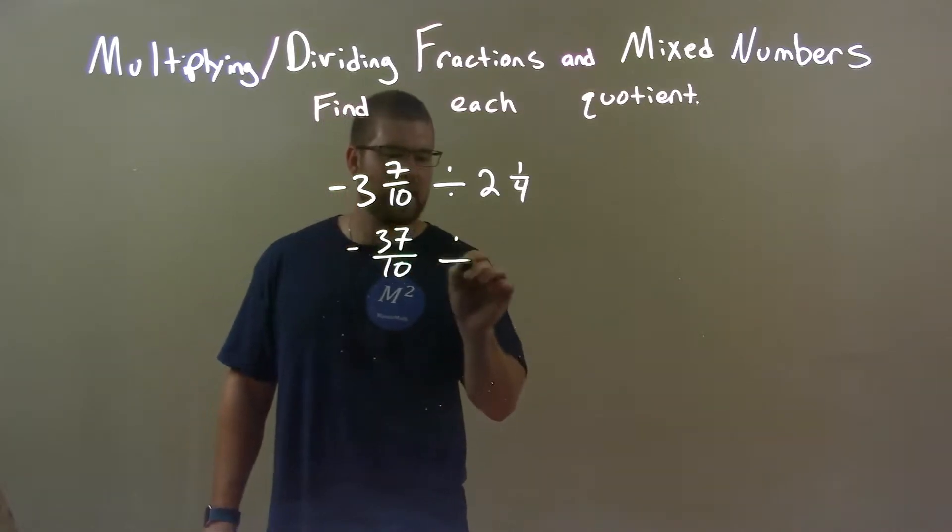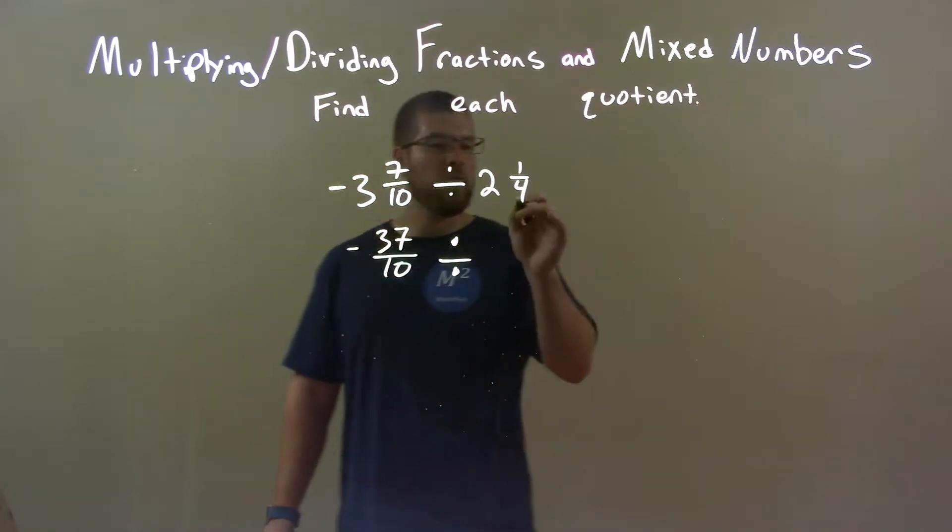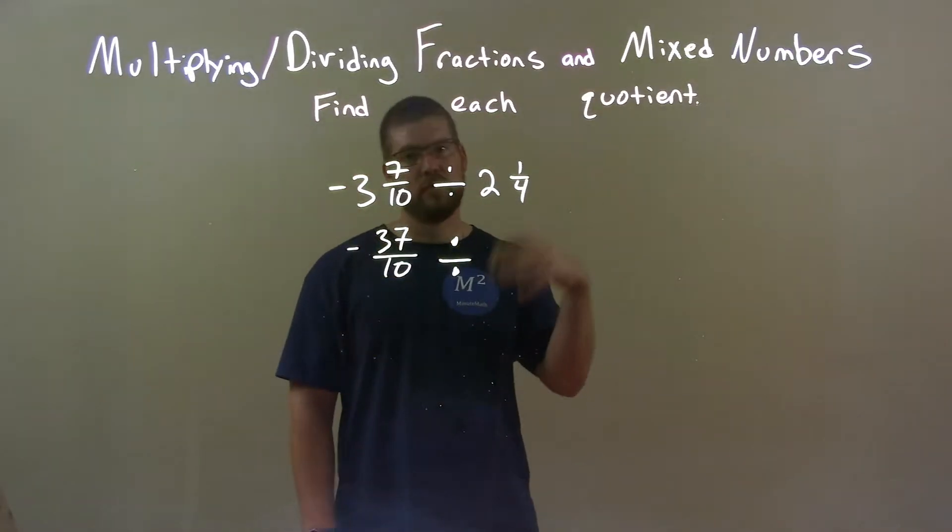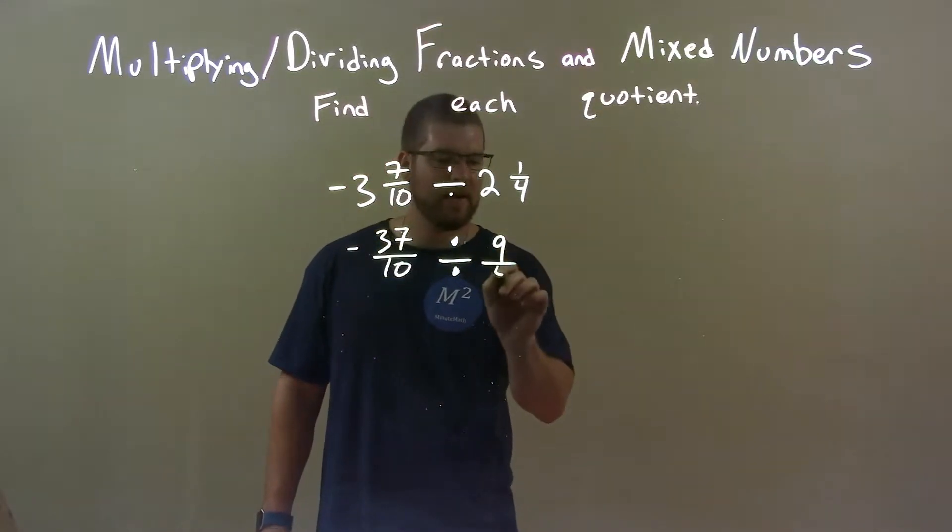Divide it by, okay, that's a weird division symbol. Sorry. 4 times 2 is 8, plus 1 is 9. 9 fourths.